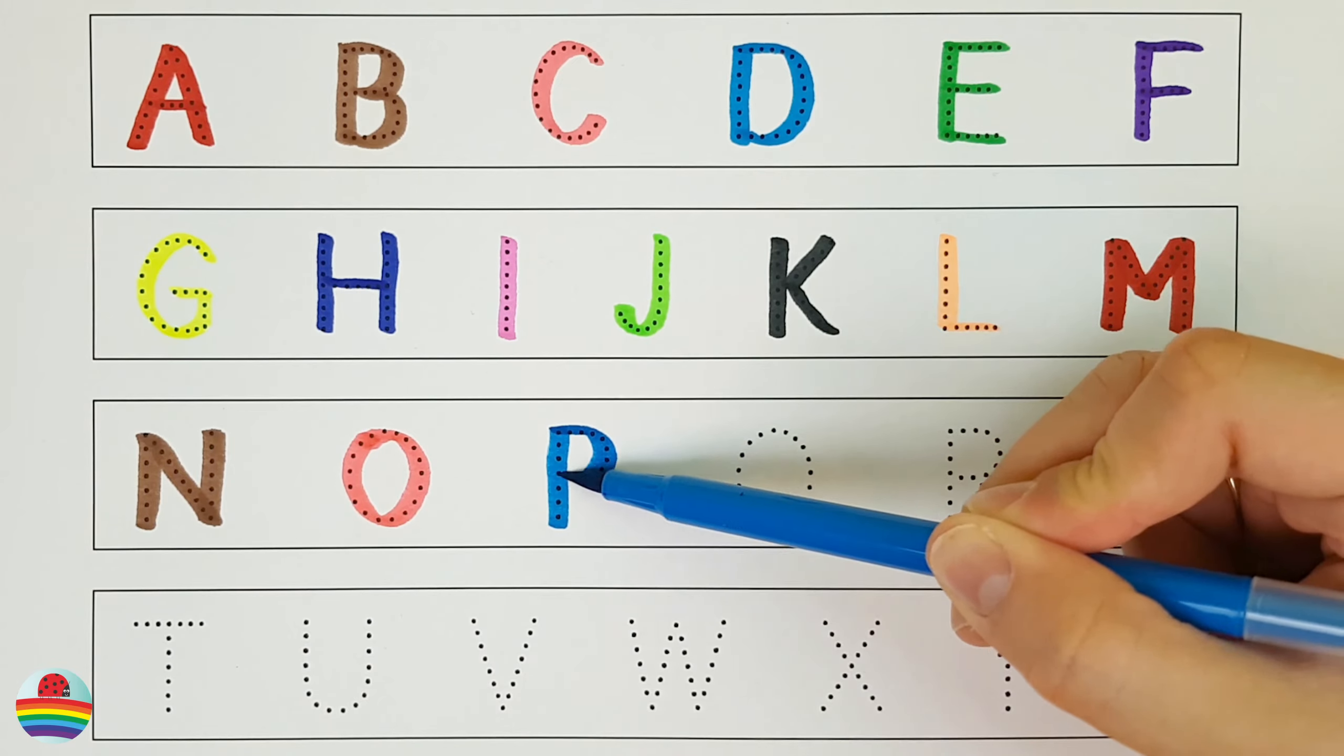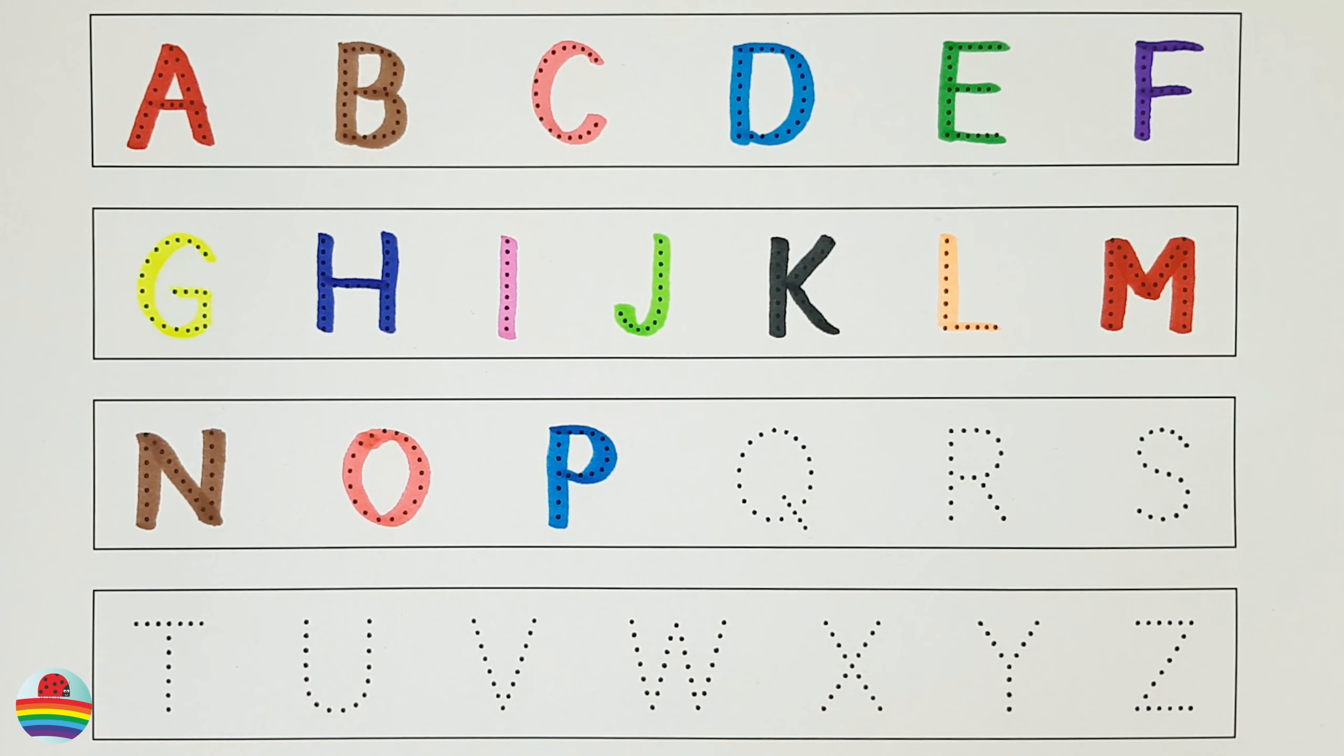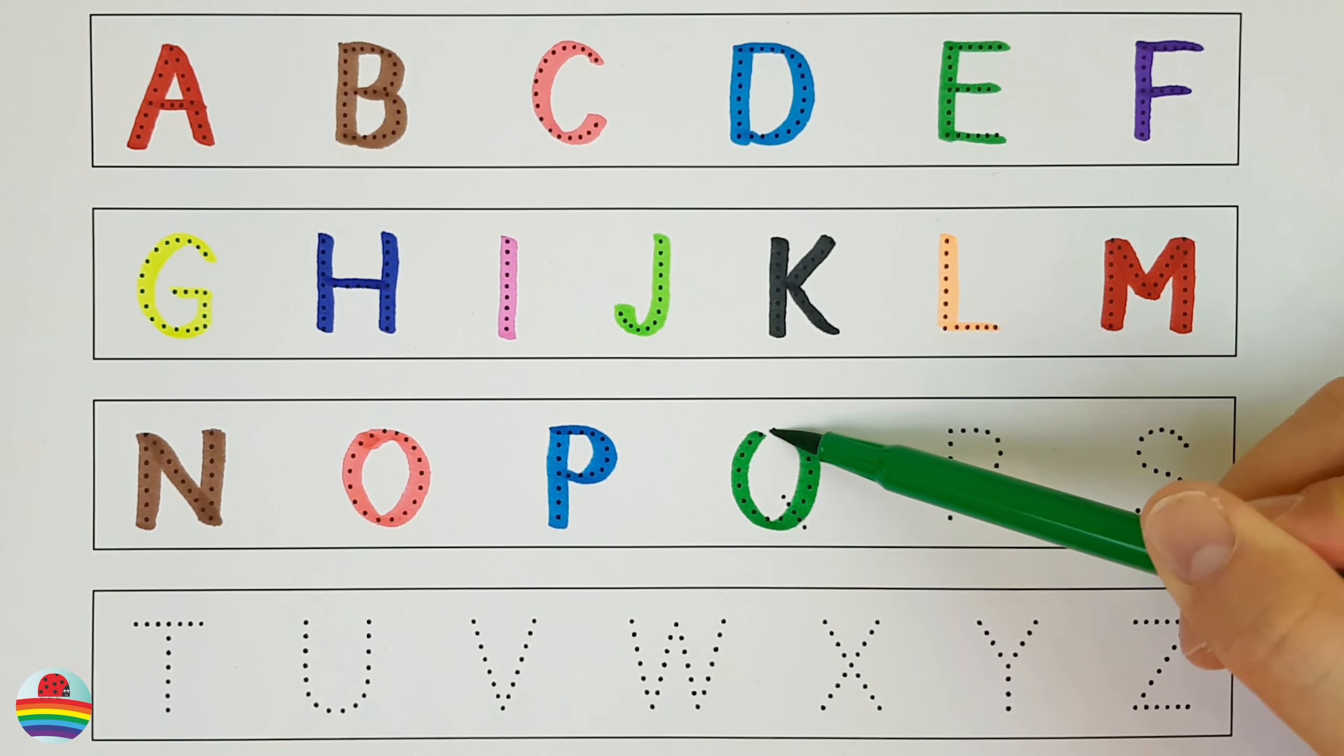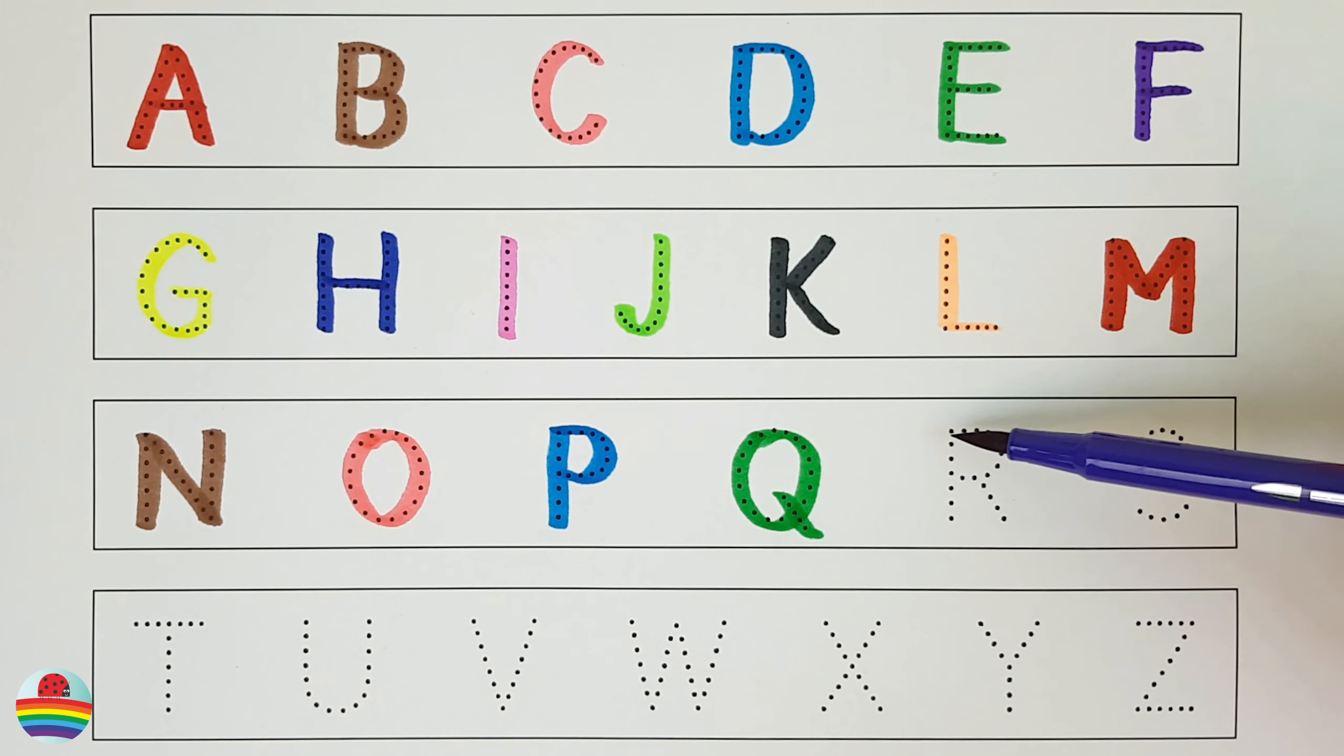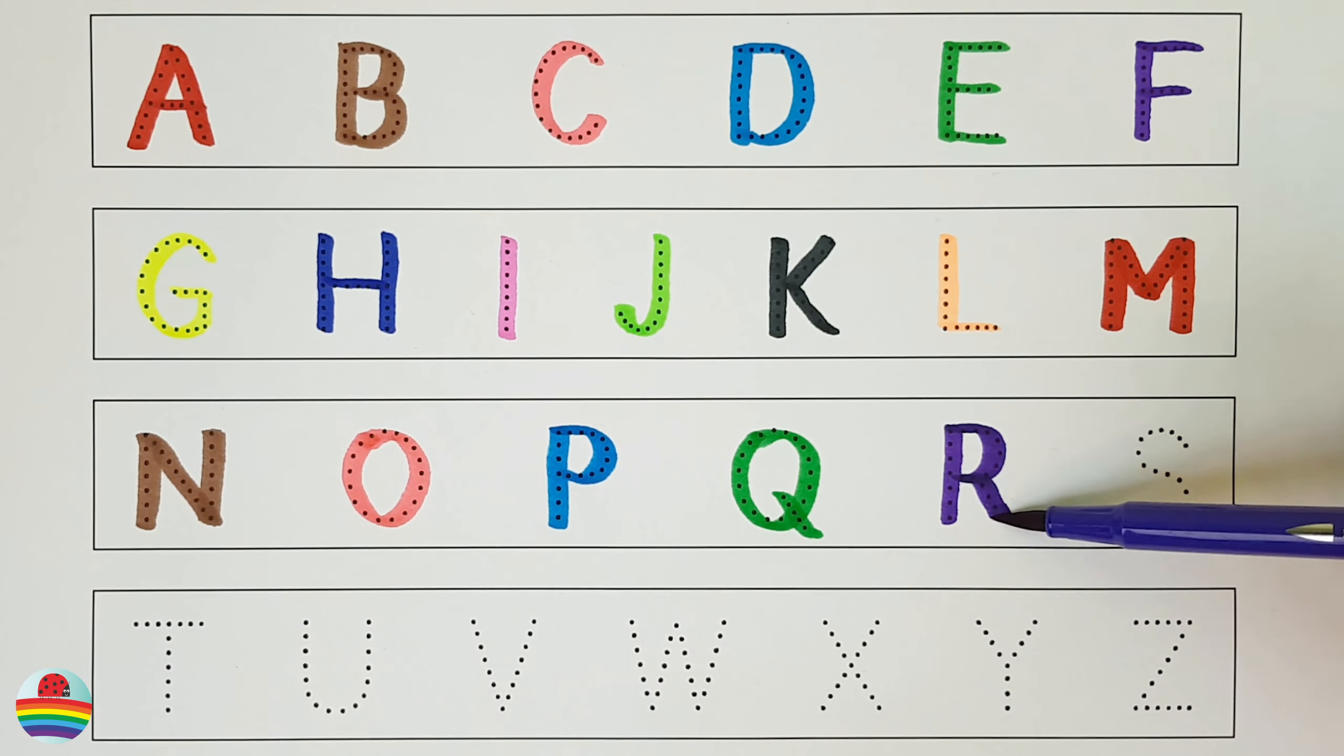P. P is for Penguin. Q. Q is for Quokka. R. R is for Reindeer.